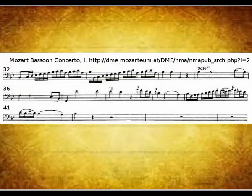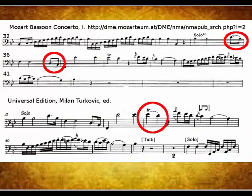Here is the opening of the solo in the first movement of the concerto from the Neue Mozart Ausgabe (NMA) website. I have extracted the bassoon part from the online Urtext edition. Let's compare the NMA edition to the Universal edition of the work, the version that I have performed from for many years. There are a few differences in the articulation, which I have circled in red.